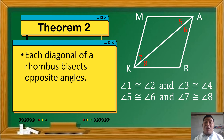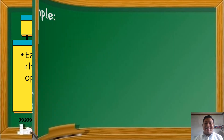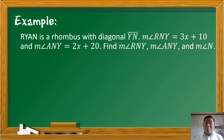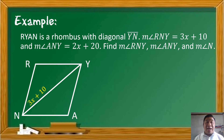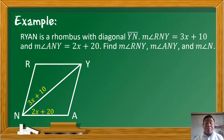Para mas maunawaan natin yung sinasabi ng theorem na ito, let's have an example. RYAN is a rhombus with diagonal YN. The measure of angle RNY is equal to 3x plus 10, and the measure of angle ANY is equal to 2x plus 20. We are asked to find the measure of angle RNY, the measure of angle ANY, and the measure of angle N — yung pinakabuong angle.